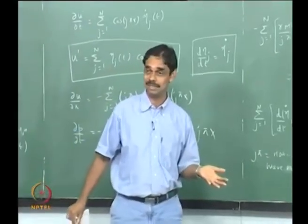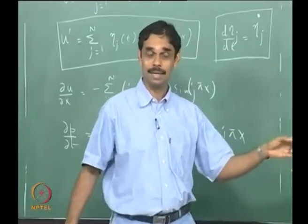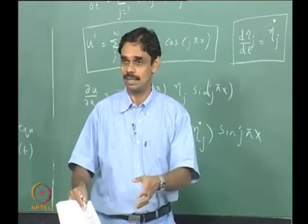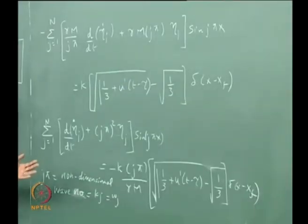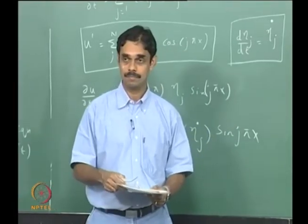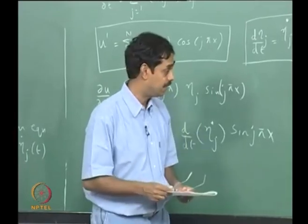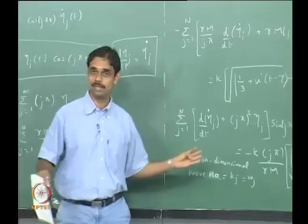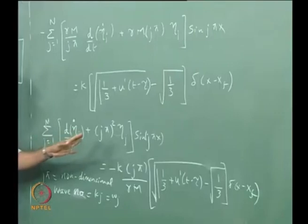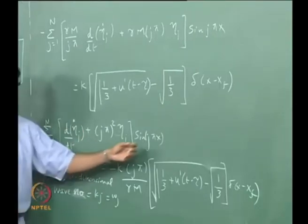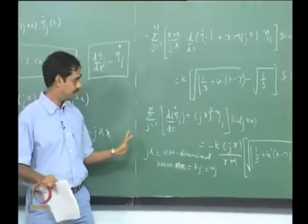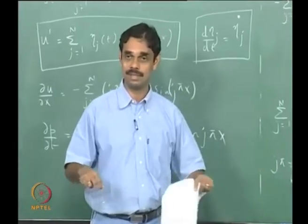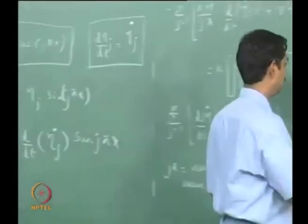To do that we adopt the Galerkin projection methodology preached at the beginning: in the vector equation case I multiplied by i, j, k — which is really an inner product. In functional space, the inner product is: multiply the whole equation by the same basis function and integrate over the domain from 0 to 1. So one time we multiply by sin(pi*x), then sin(2*pi*x), sin(3*pi*x), and integrate over the entire domain. That is the definition of inner product in this context.